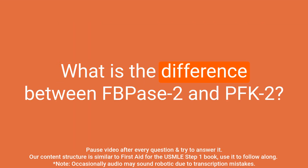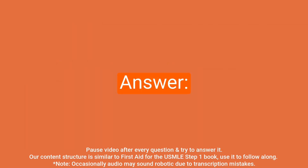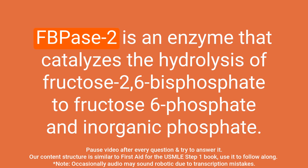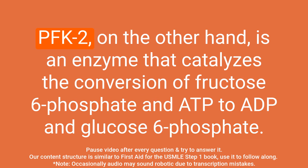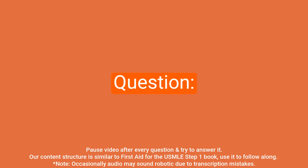Question: What is the difference between FB-PACE-2 and PFK-2? Answer: FB-PACE-2 is an enzyme that catalyzes the hydrolysis of fructose 2,6-bisphosphate to fructose 6-phosphate and inorganic phosphate. PFK-2, on the other hand, is an enzyme that catalyzes the conversion of fructose 6-phosphate and ATP to ADP and glucose 6-phosphate.